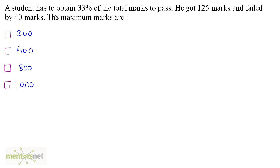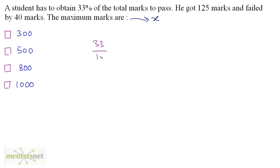A student has to obtain 33% of the total marks to pass. He got 125 marks and failed by 40 marks. What are the maximum marks? Let the maximum marks be x. The student has to obtain 33% of x to pass, so 33/100 times x equals the passing marks.